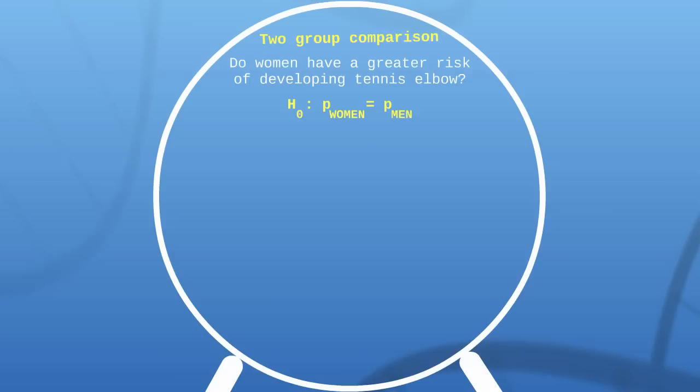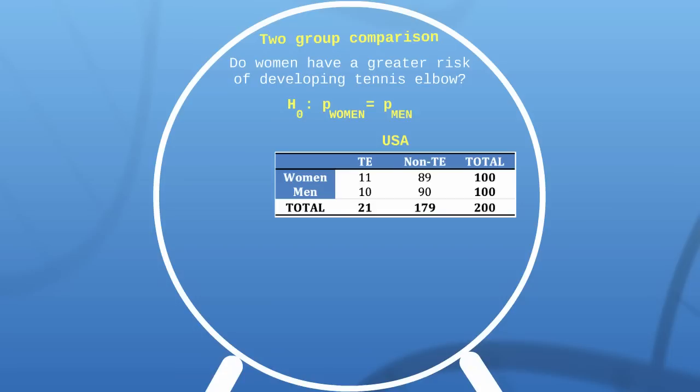First up, a two-group comparison: do women have a greater risk of developing tennis elbow? We always make some kind of conservative hypothesis and put it to the test. Our hypothesis here is that the proportion of women (p_women) developing tennis elbow is the same as the proportion of men. We have a sample of 200 tennis players from the United States: 100 women and 100 men. Eleven women developed tennis elbow and 10 men developed tennis elbow, so the proportion of women is 0.11 and the proportion of men is 0.10.